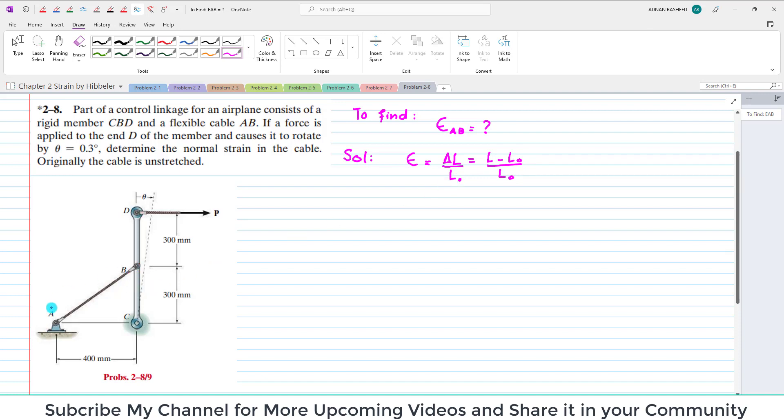You can see the original length of AB can be found by using Pythagorean theorem. So let L0 be the original length of AB, which is equal to 400. Initially, if the force is not applied, this makes a right angle triangle. So this length will be equal to the square root of 400 squared plus 300 squared. 400 is this length, 300 is this length.